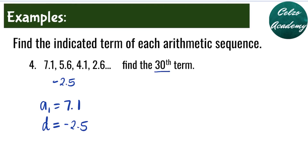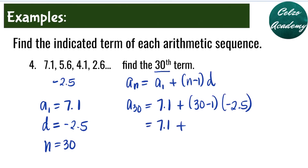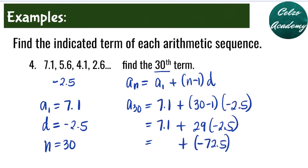We're solving for the 30th term, so n is 30. Using the arithmetic sequence formula a sub n equals a sub 1 plus n minus 1 times d, we solve for a sub 30. Our a sub 1 is 7.1, plus 30 minus 1, times the common difference of negative 2.5. Simplifying: 7.1 plus 29 times negative 2.5 equals 7.1 plus negative 72.5, which equals negative 65.4. That is our 30th term.